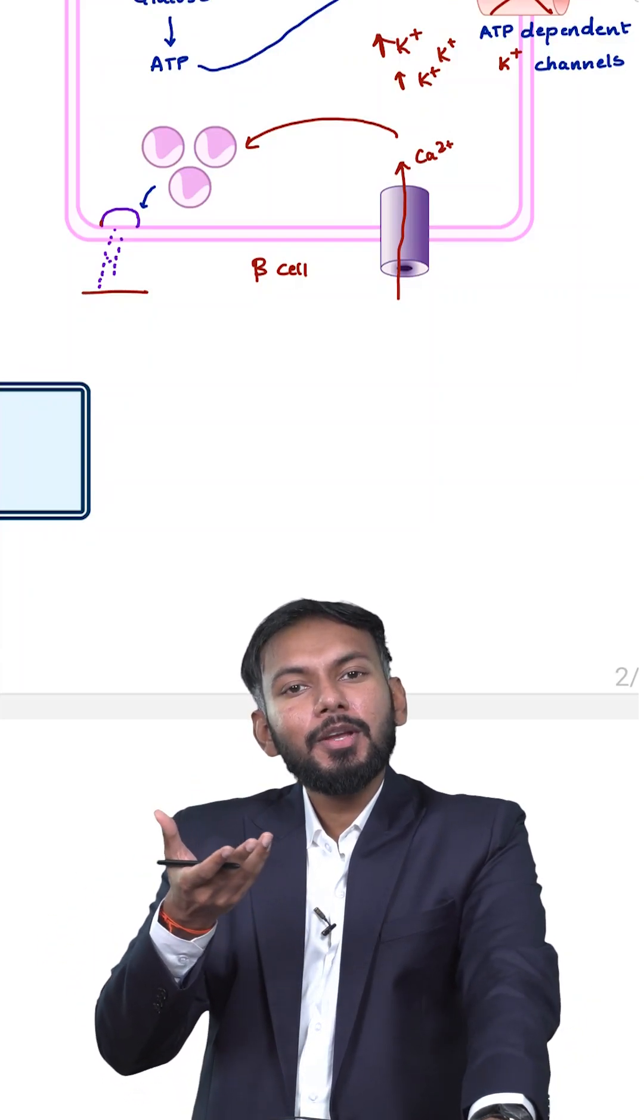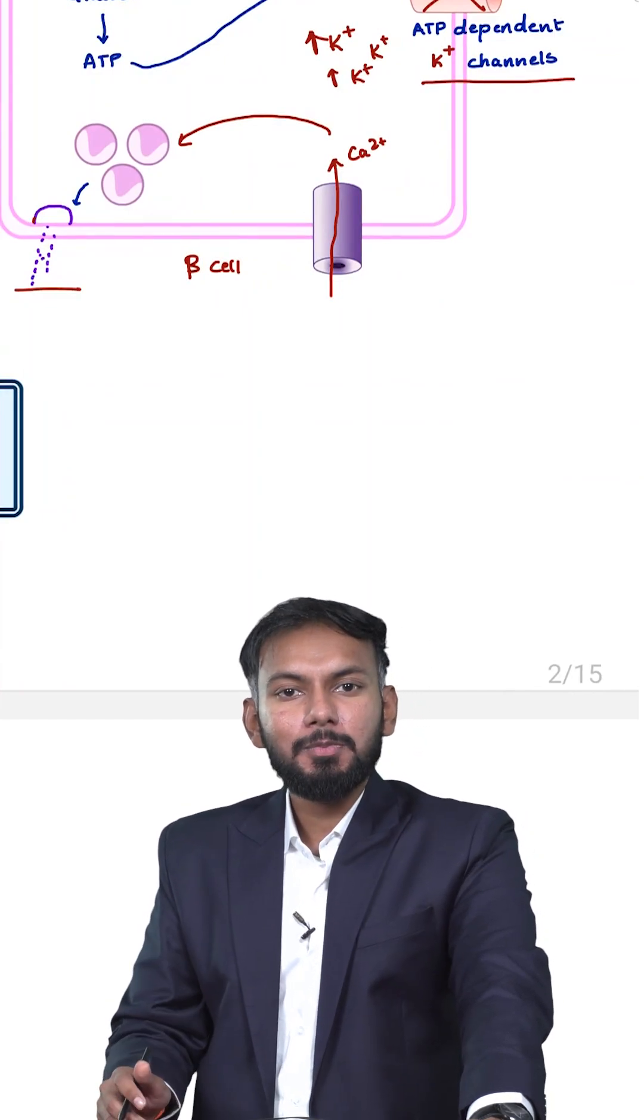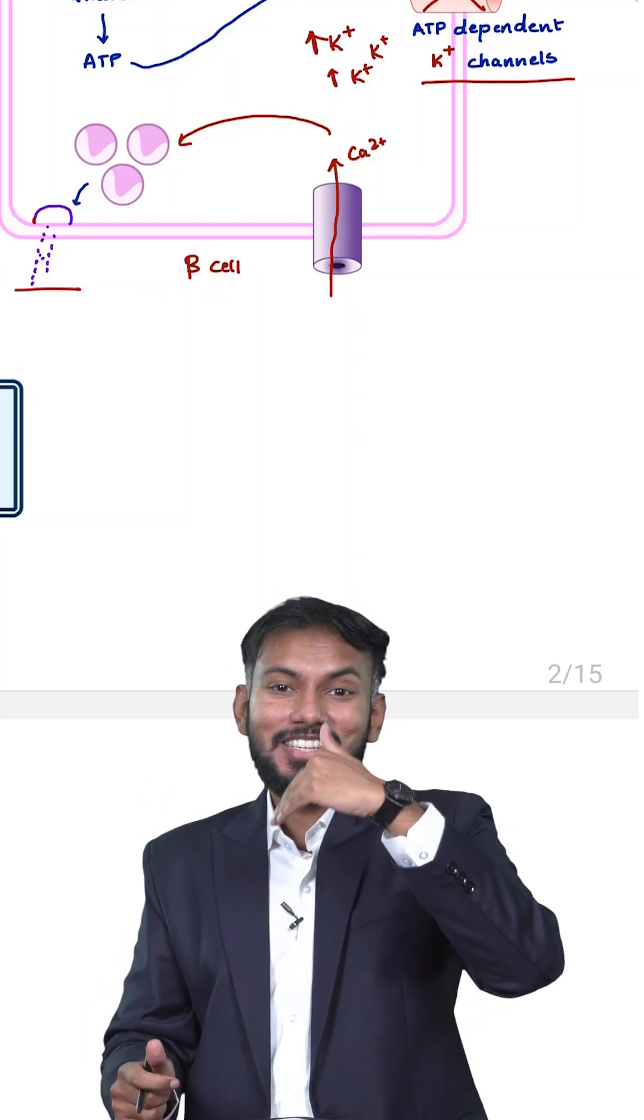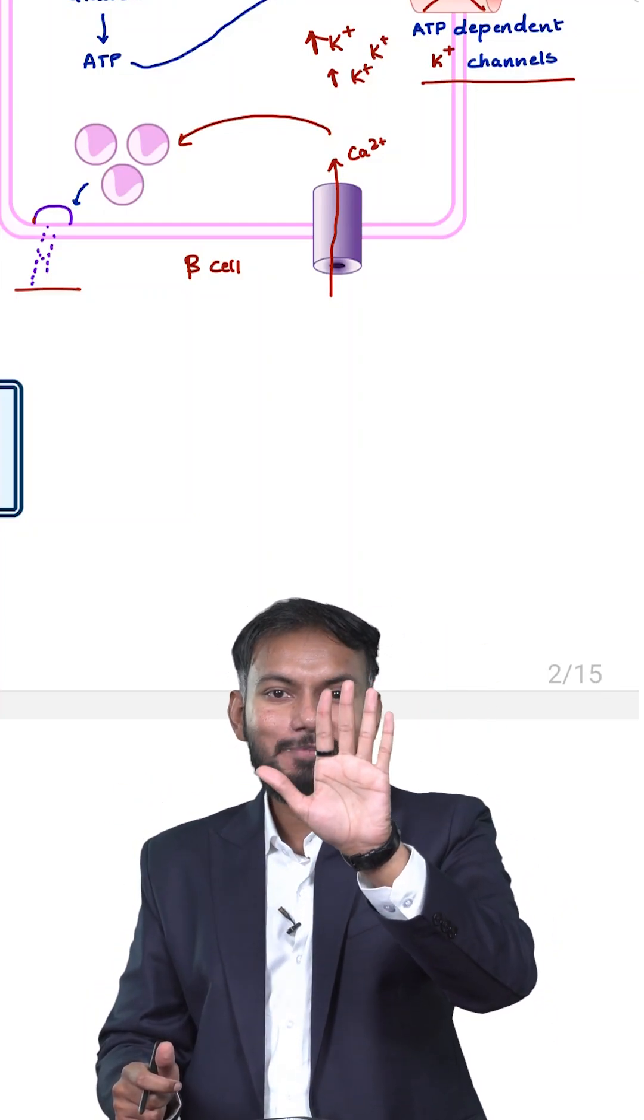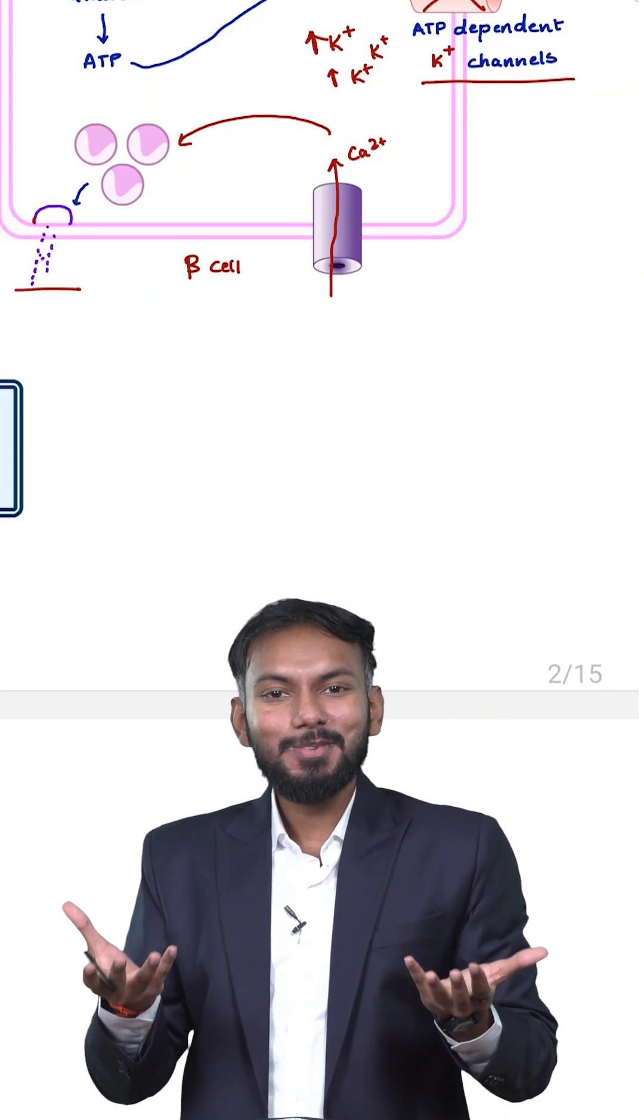Now what are sulfonylureas and meglitinides doing? They are blocking the ATP dependent potassium channels. So what will happen? Potassium will increase, depolarization, calcium channels will open, calcium will come inside and the vesicles will release the insulin. This is the mechanism of action.